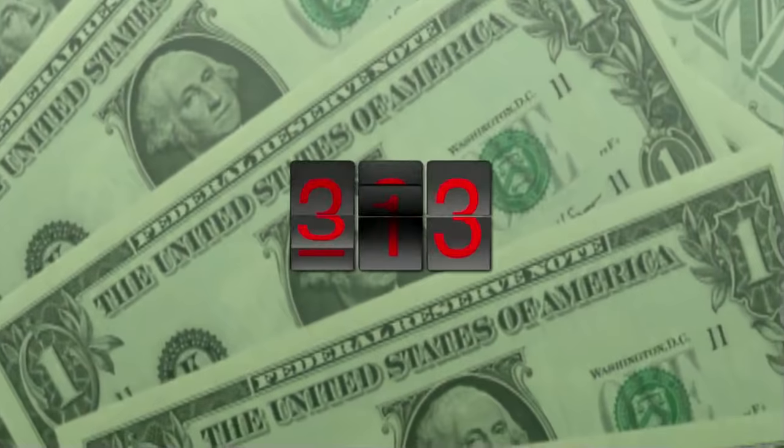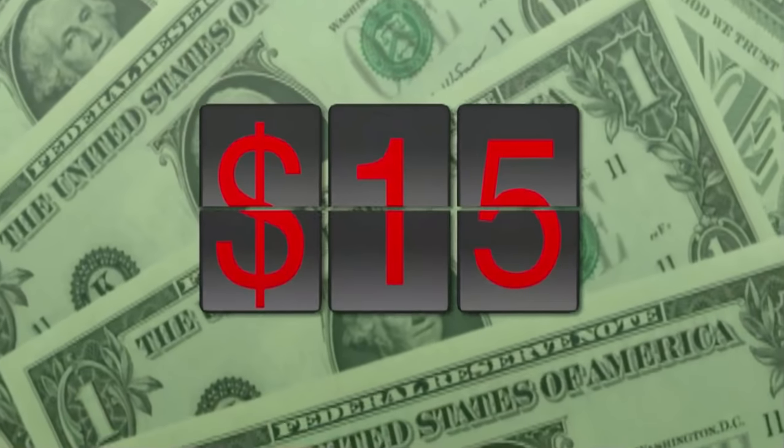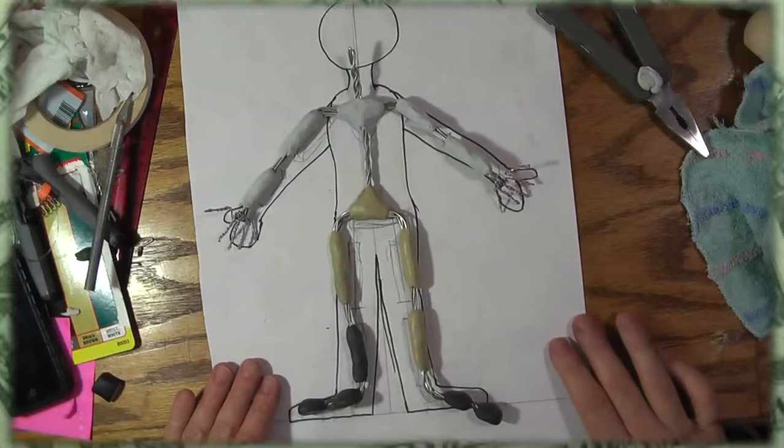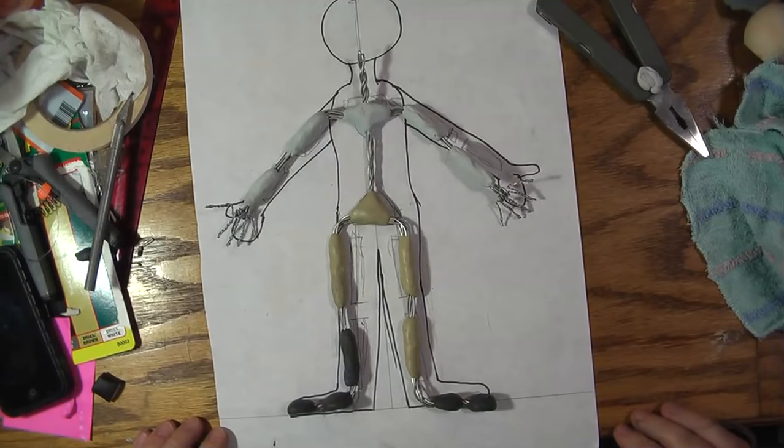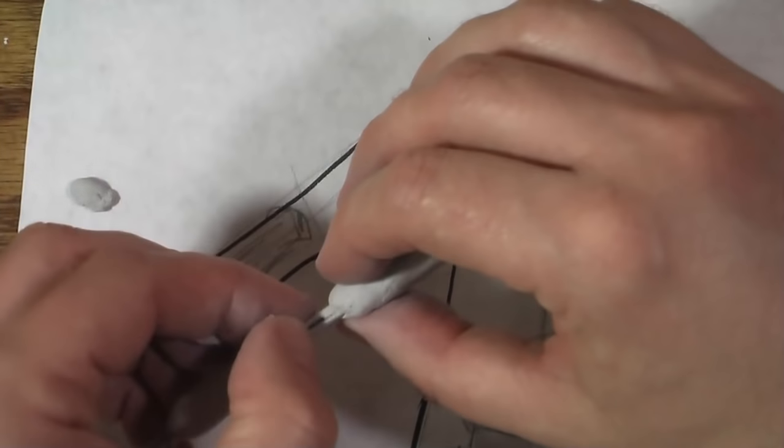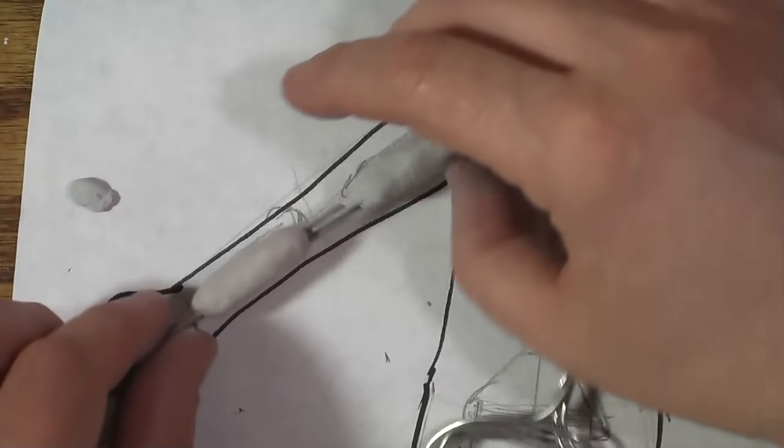But if your budget is more in the $15 range, then this tutorial is for you because we're going to make this armature. This is a wire-based armature using epoxy putty to hold it together and to give it bones.